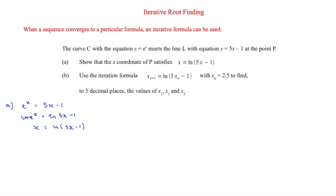In part B we use this iteration formula that we found in part A. Sometimes the question won't give you the formula and you have to work it out. We start with x₀ = 2.5.